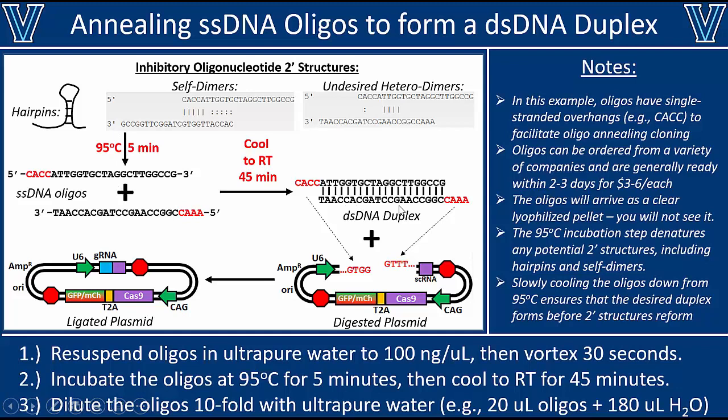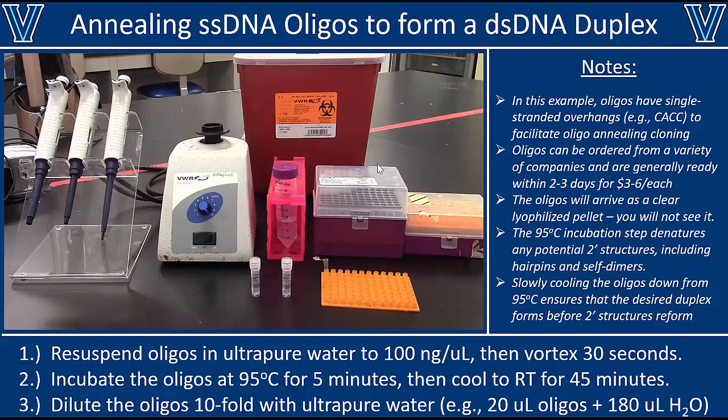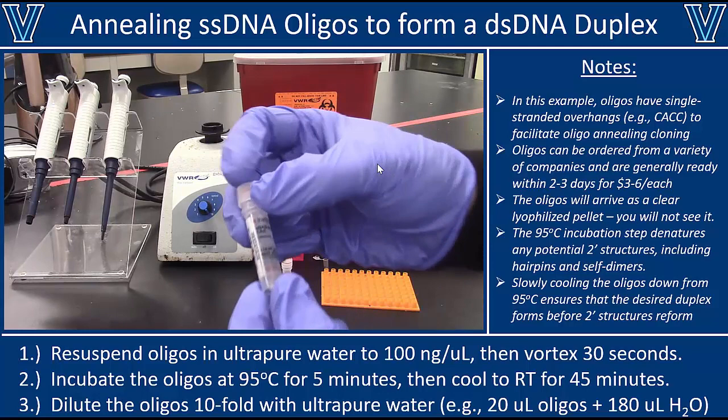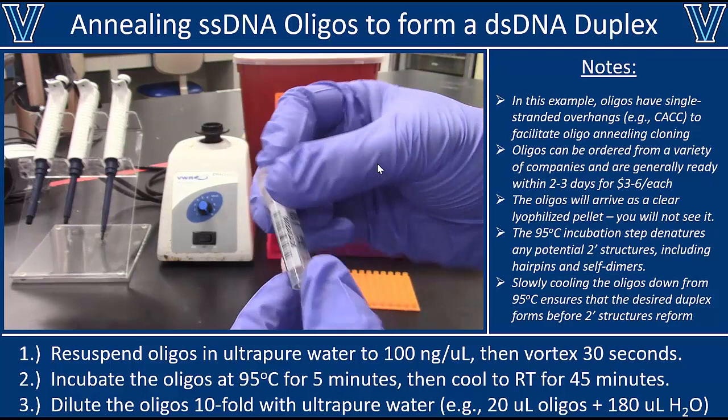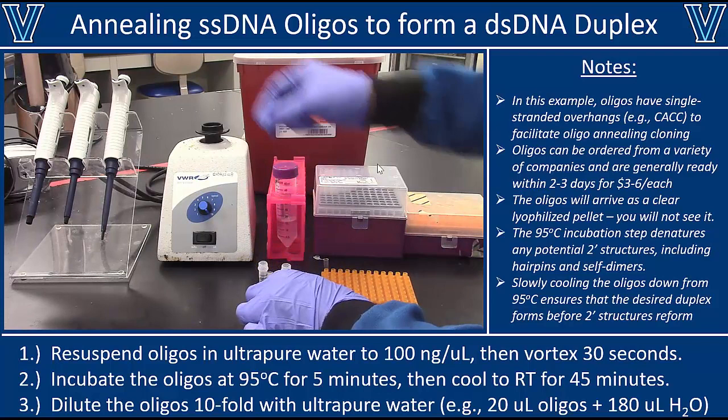So as long as we go through this process, we should get a lot of duplex formation and have plenty of annealed oligos available for cloning. Let's see what this actually looks like in the lab. This is what your oligos are going to look like when you order them from a company — they come in what looks like an empty tube, because the oligos are lyophilized, so they'll be in a clear pellet at the bottom. Don't worry if you can't see the pellet; it is actually there.